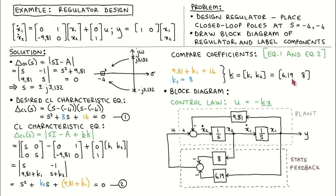With this state feedback gain vector, the actual closed-loop characteristic equation will match the desired one, placing the closed-loop poles in the desired locations. To understand what we have, we draw the block diagram of the regulator. The regulator contains the plant, drawn from the state variable equations. The control law states that the plant input is minus the state feedback gain vector times the state vector. From the calculated gain vector, x1 is multiplied by 6.19 and x2 by 8; after adding the results and flipping the sign, we get the plant input.